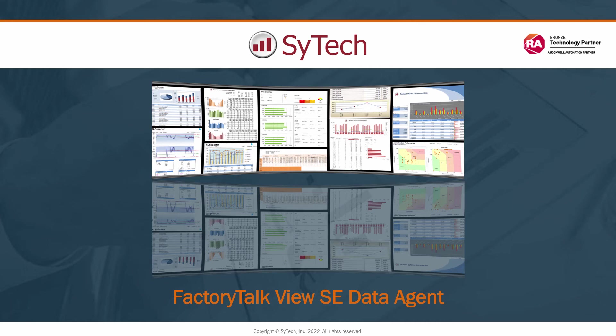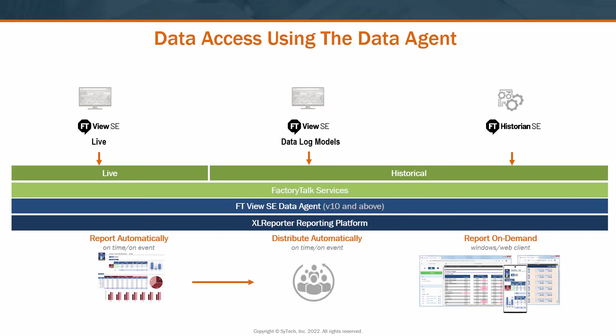In this video, we'll discuss Excel Reporter's interface to FactoryTalk Vue SE and Historian SE called the FactoryTalk Vue SE Data Agent. The Data Agent is a REST server integrated with the FactoryTalk Services platform. It allows seamless access to live tag values from PLCs or the HMI, as well as process history through both Vue SE Datalog models and Historian SE. This means that FactoryTalk users can generate automated reports and live dashboards with any and all tag data available in their FactoryTalk application, with no configuration beyond just installing the Data Agent.